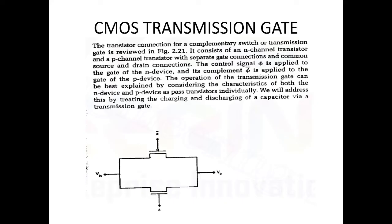We know the transistor connection for a complementary switch or a transmission gate, as shown in the figure. Here we have two gates — one above and one below — representing two switches. Two sources are connected together as the input, and two drains are connected together as the output. One transistor has a bubble and the other does not, showing they are complementary to each other — one is NMOS and the other is PMOS — together forming a CMOS transistor.